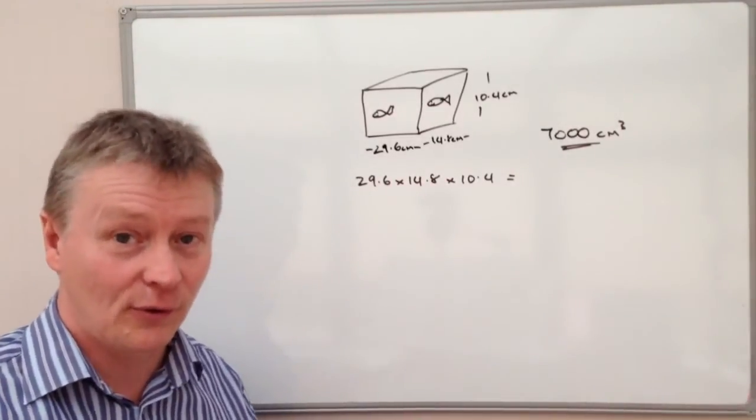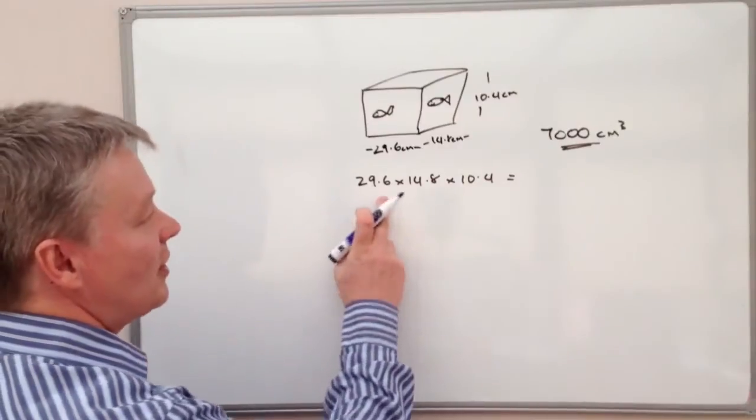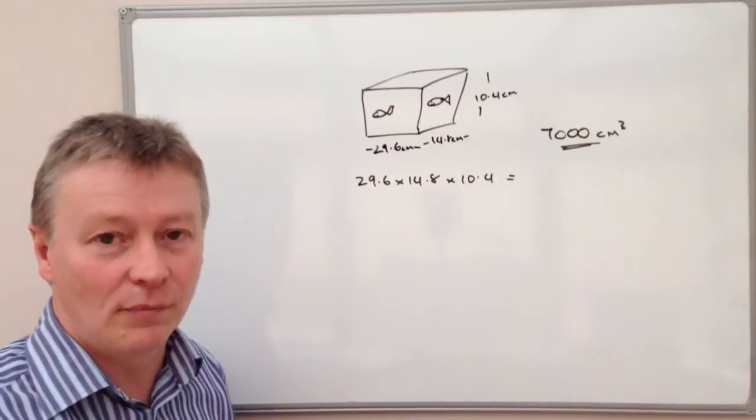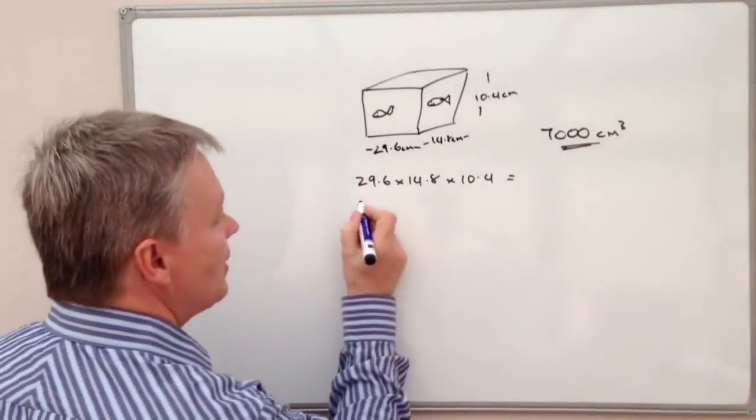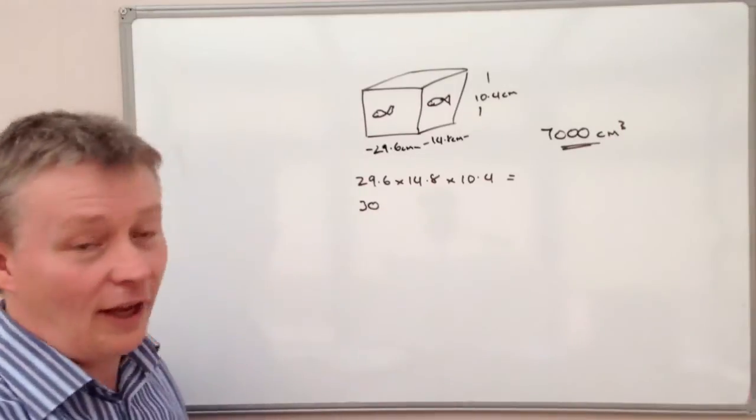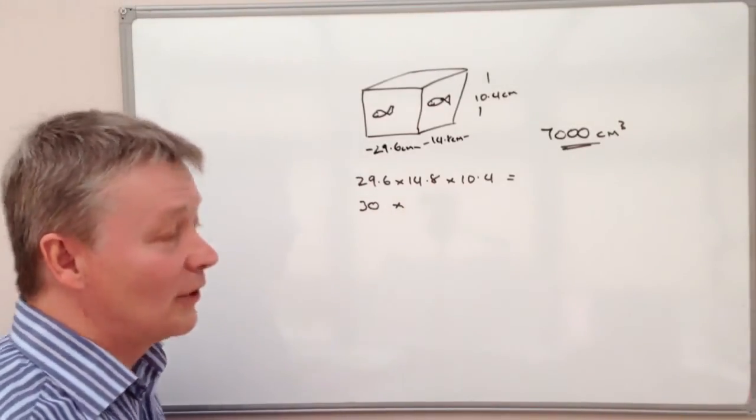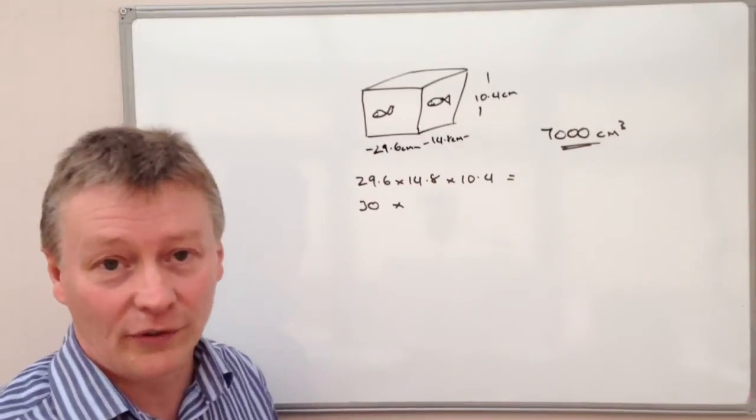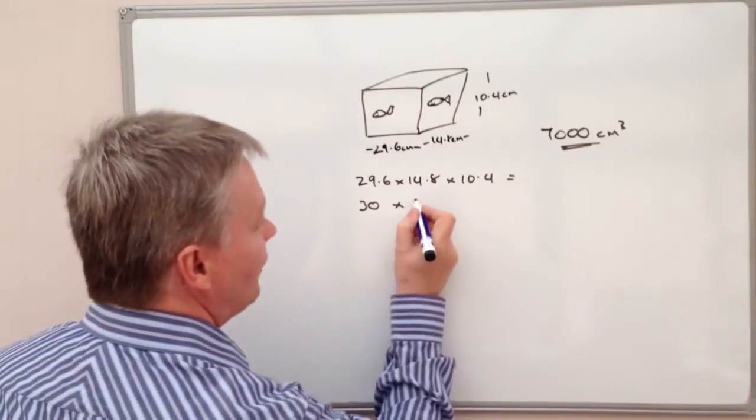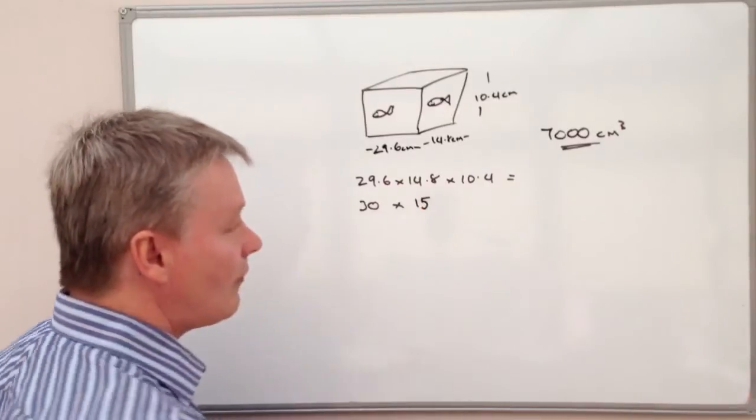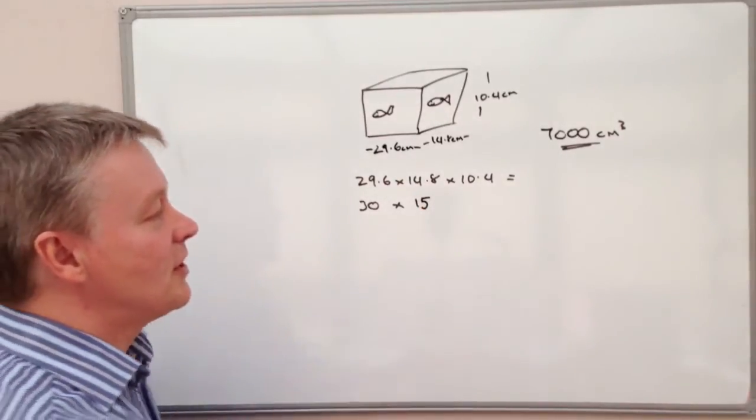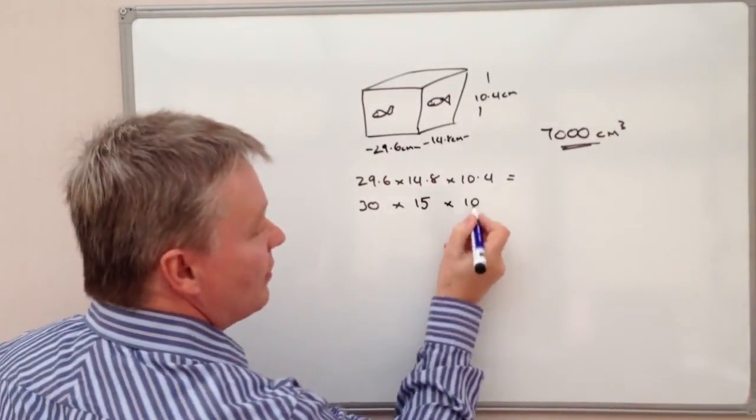29.6, well the closest number that I can work with on that is 30, so I'm going to make that 30. And again I've got 14.8, well the closest number that I can work with on that one is going to be 15. And then the closest number to 10.4 is going to be 10.